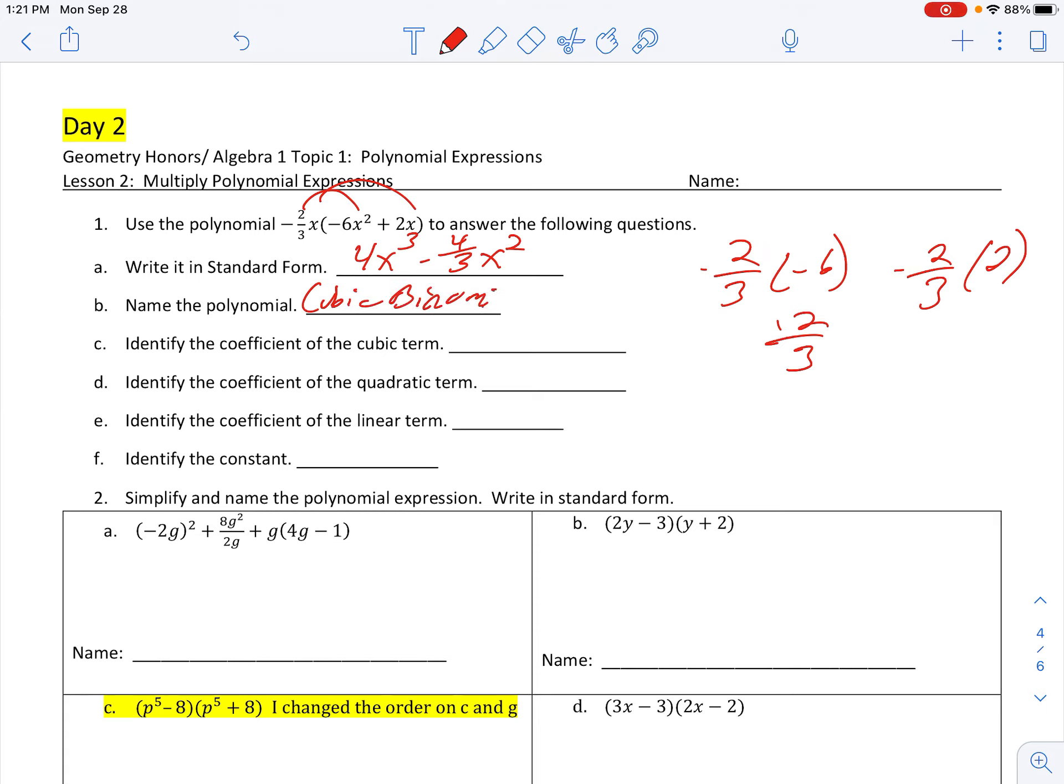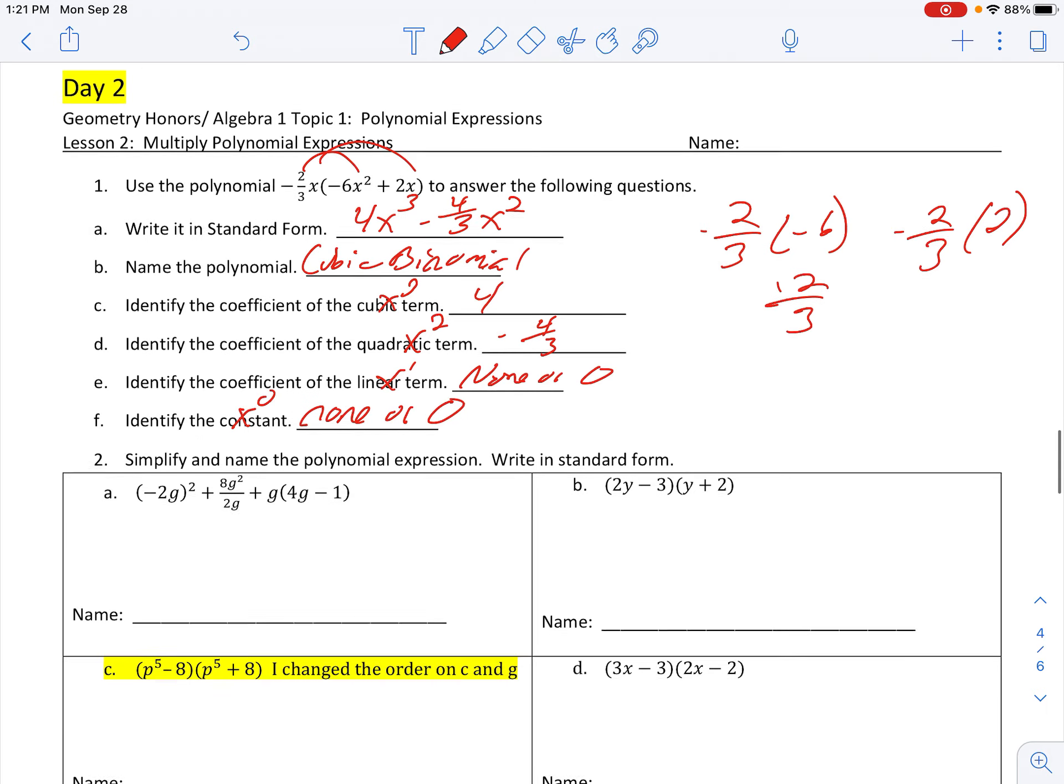Cubic and binomial because of two terms. Coefficient of the cubic term is 4. Quadratic term is negative four-thirds. Linear term, there is none, or you could say zero. And the constant term is either none or zero.